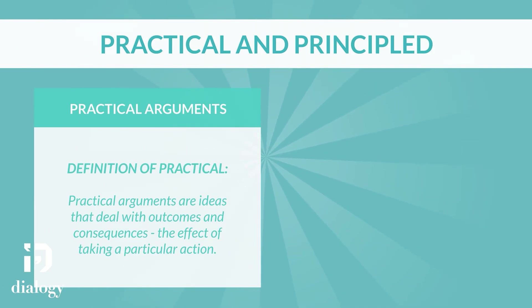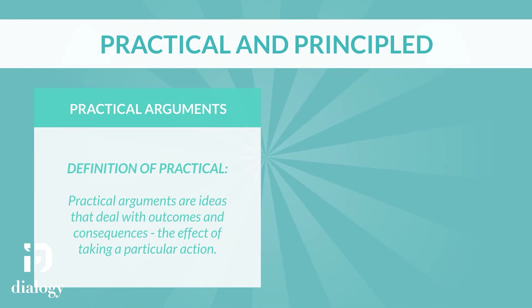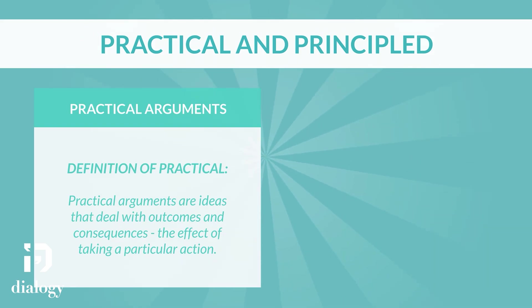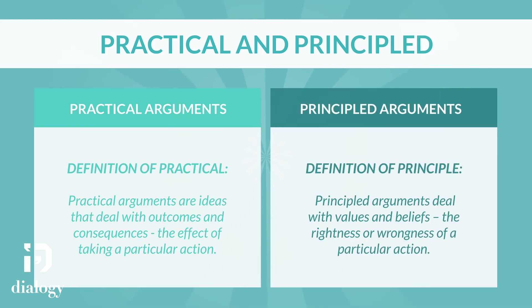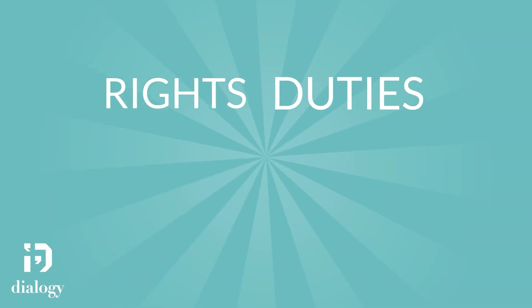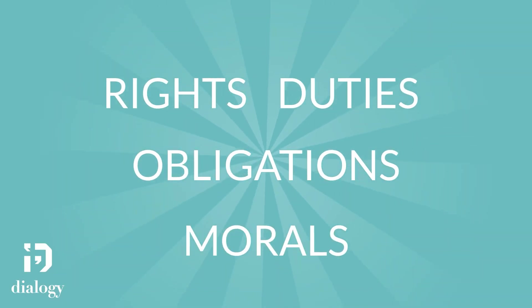Practical arguments are ideas that deal with outcomes and consequences — the effect of taking a particular action. On the other hand, principled arguments deal with values and beliefs, the rightness or wrongness of a particular action. Principled arguments are about rights, duties, obligations, and morals.